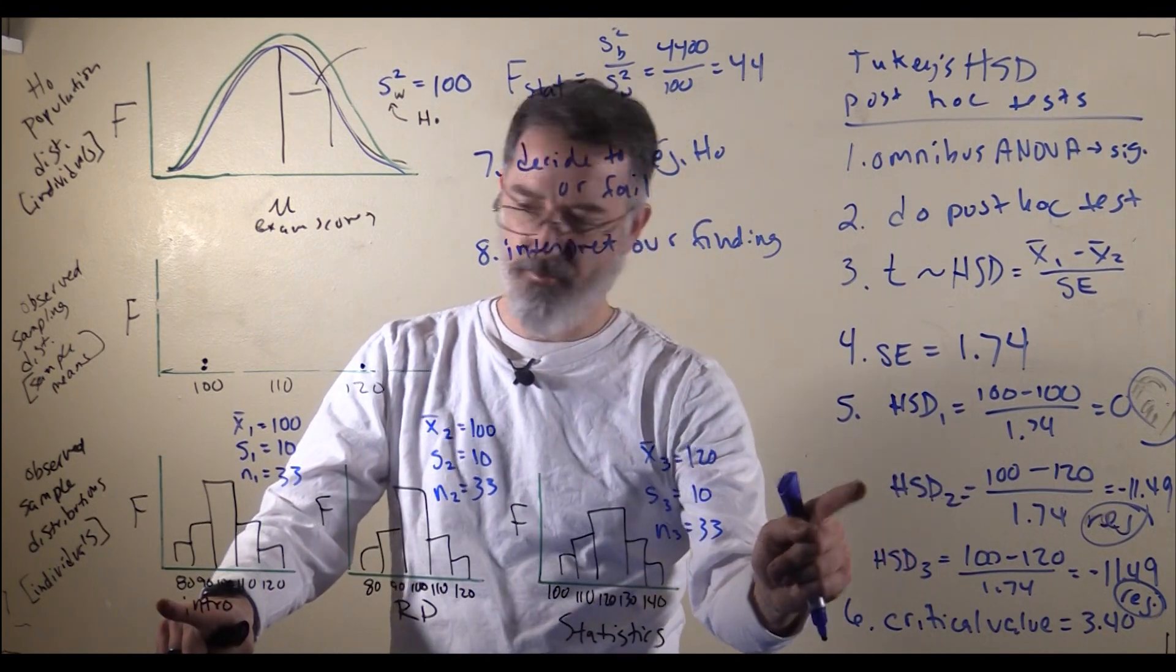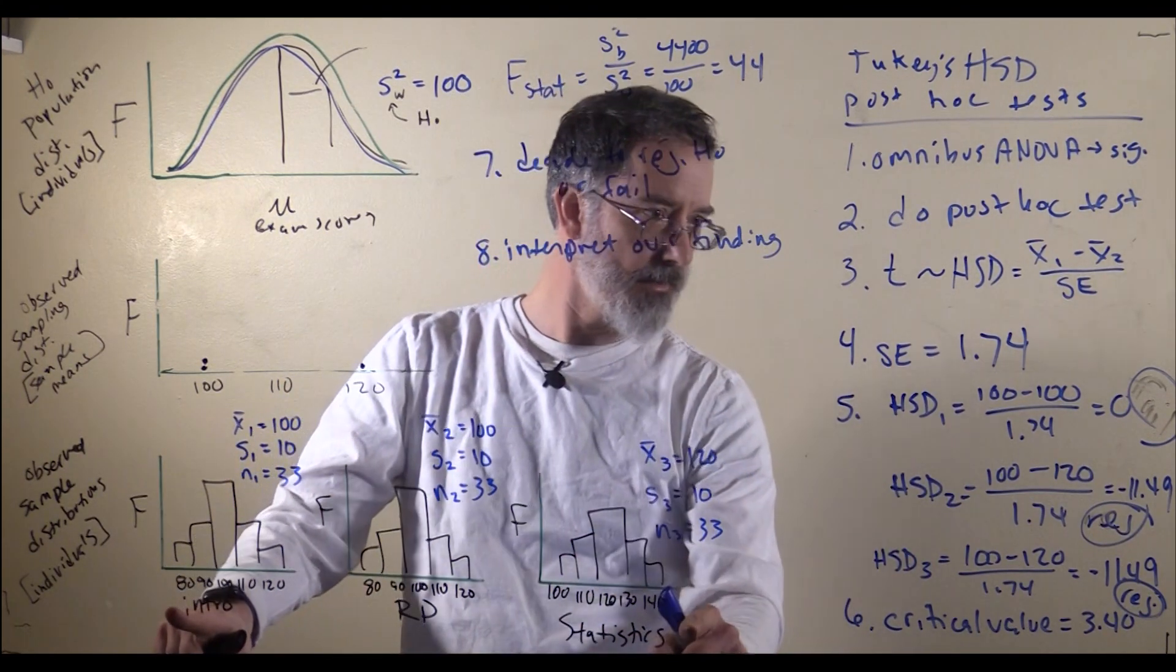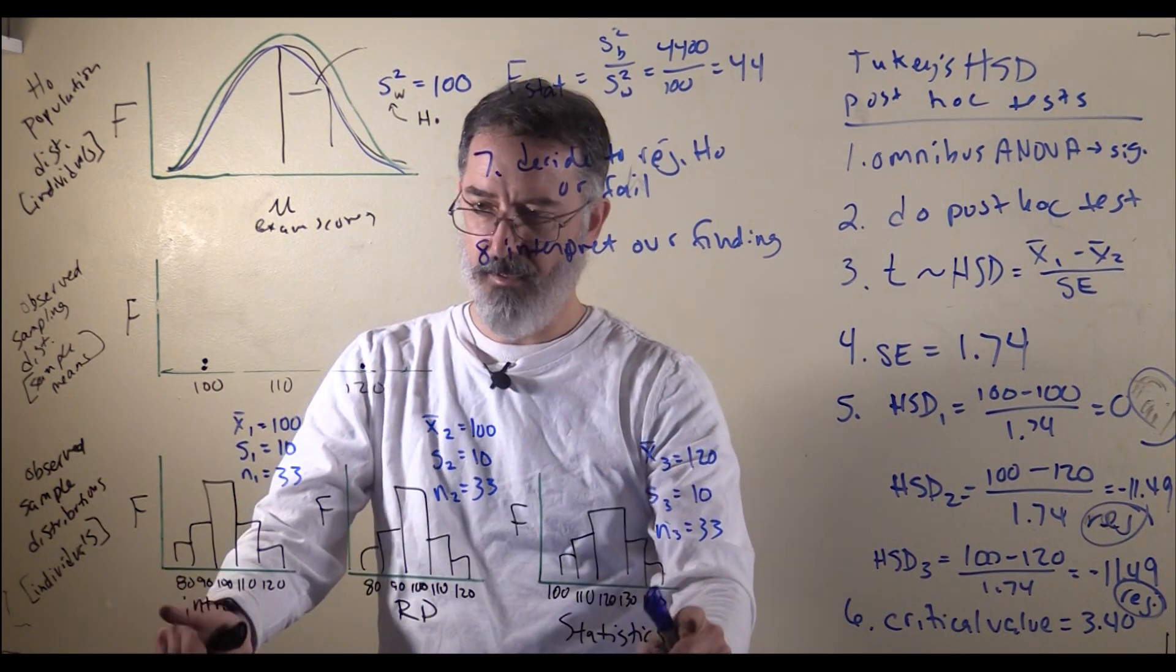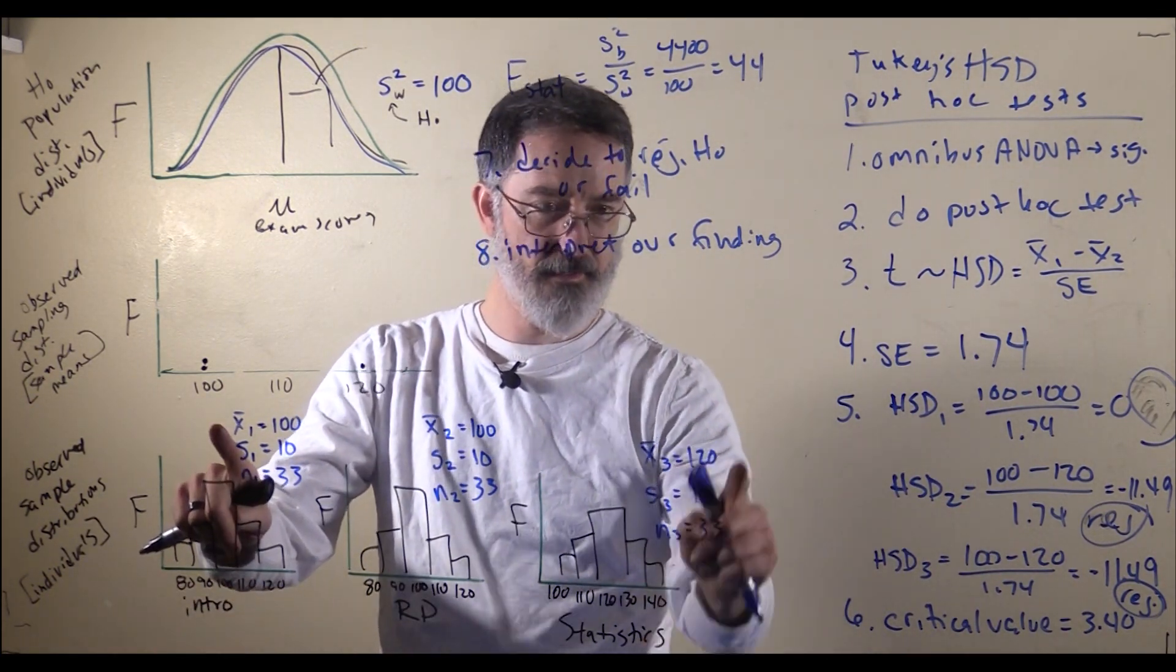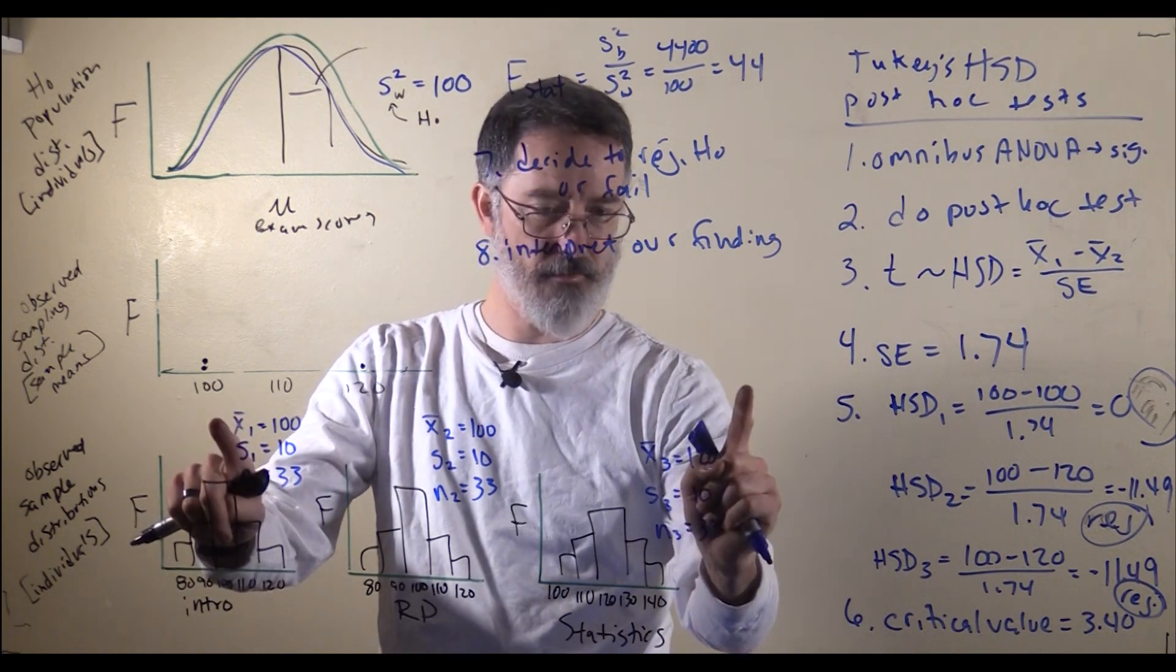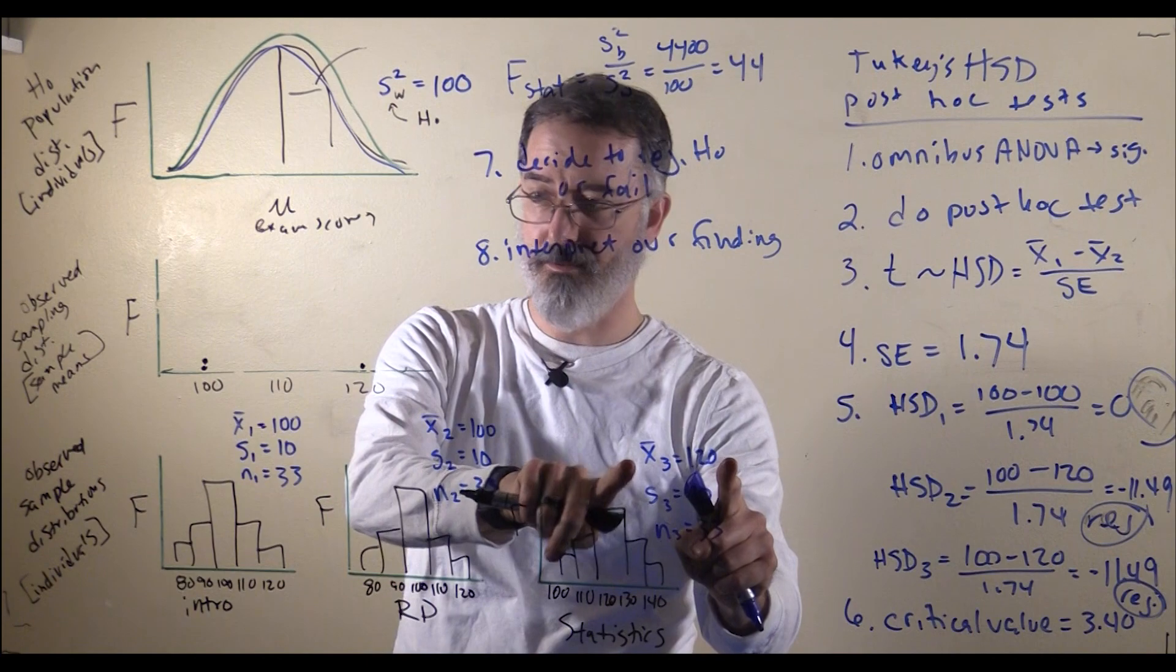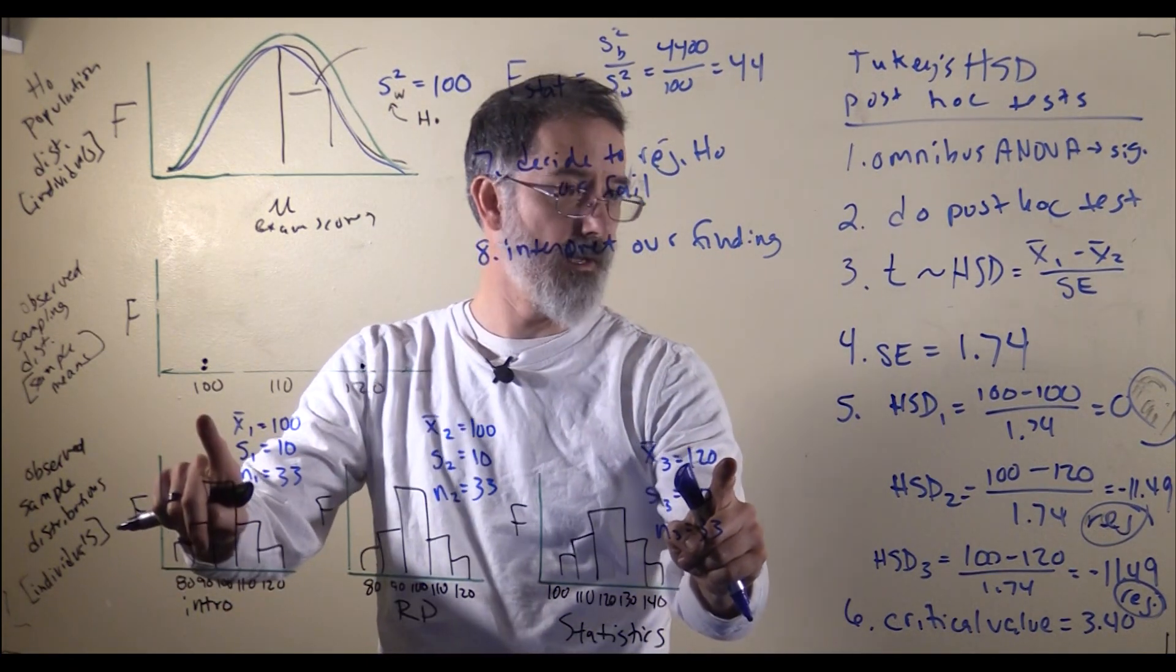To interpret the next one, that was intro and stats, we did reject the null hypothesis here. Then we look at the means, and we see statistics has a higher mean than intro. That means we interpret this as the exam being easier for statistics than it was for intro.